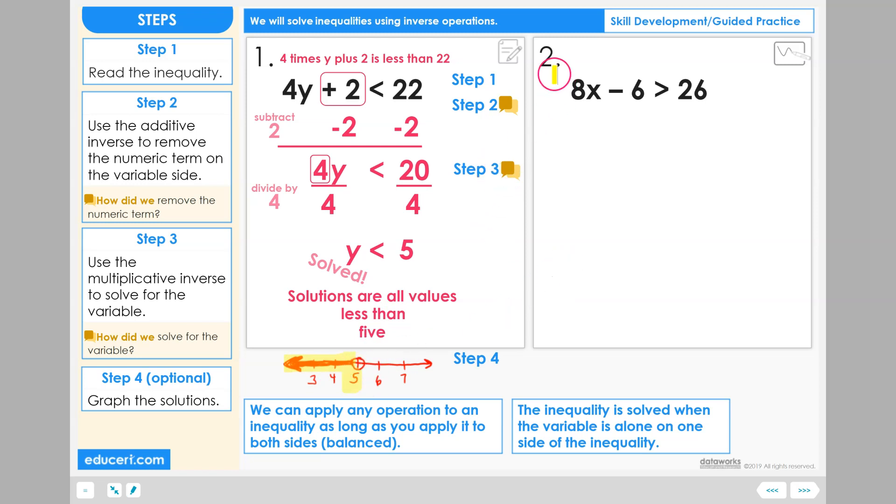You are now ready to solve the inequality in problem number 2, getting the variable x all alone on one side, using inverse operations.